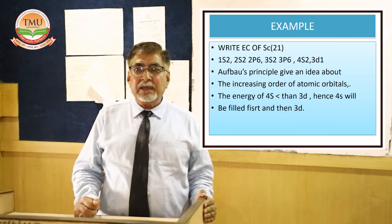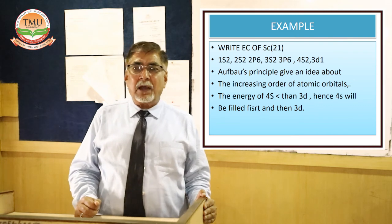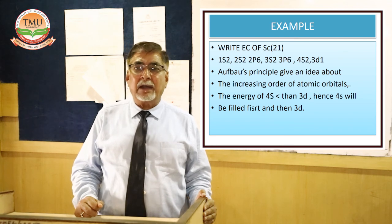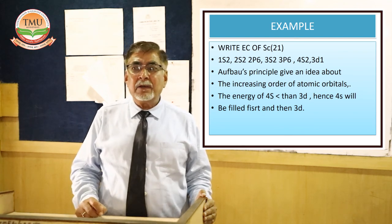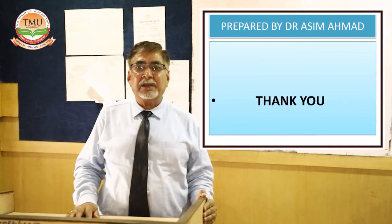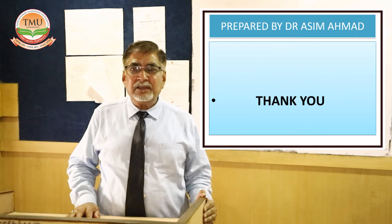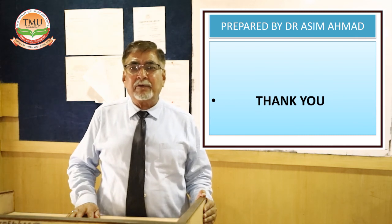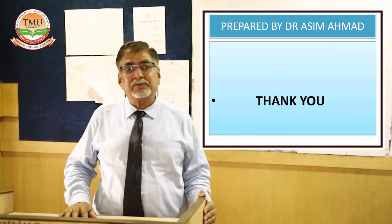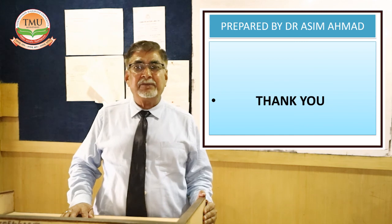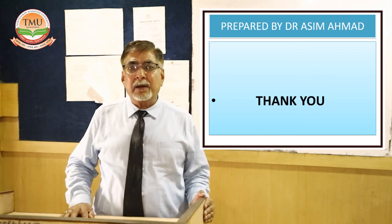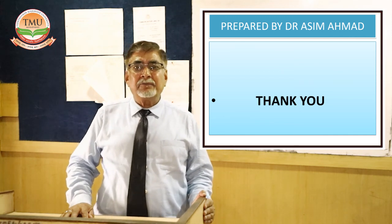Apart from these, we have the lanthanides and actinides. The 4f elements are called lanthanides and the 5f elements are called actinides. In these elements, we observe the filling of the 4f and 5f orbitals respectively. Every student must understand that electronic configuration plays a very important role in determining group number, period number, and the chemical properties of elements. Thank you.